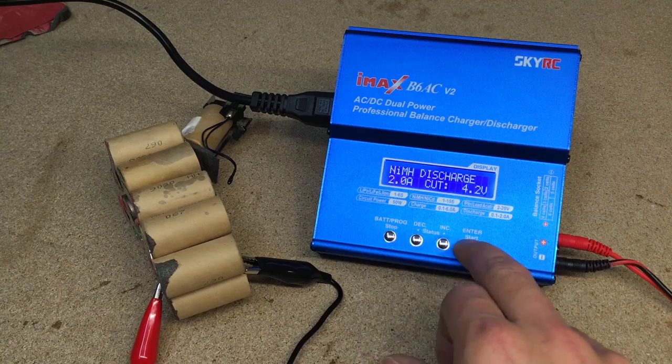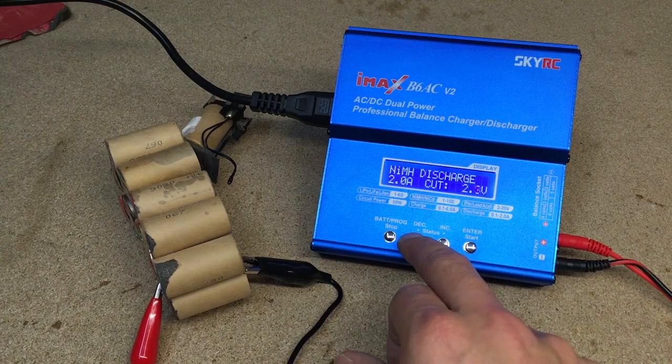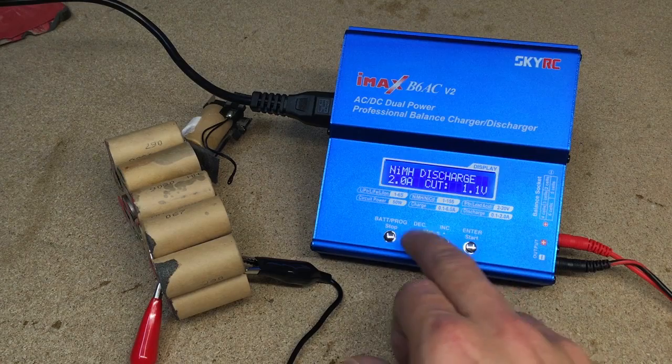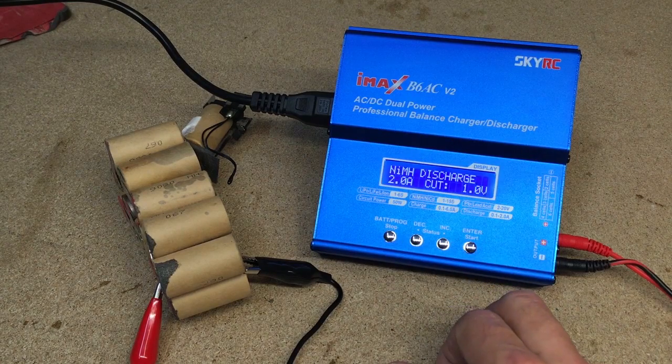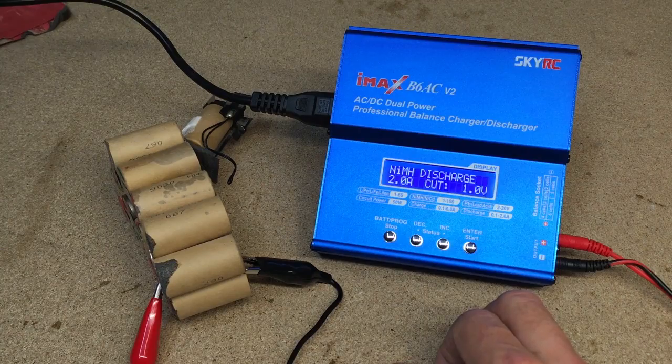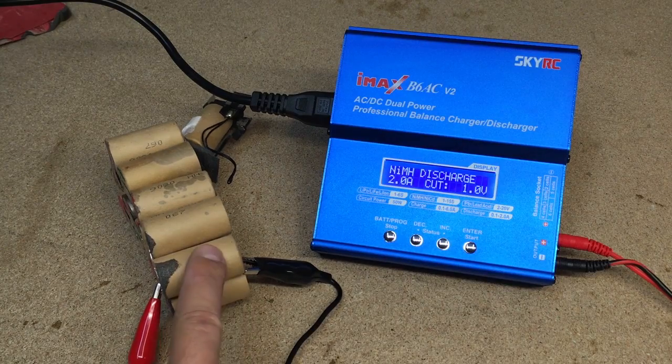I did that because I want to know how much juice is still left in the good cells and thus if repairing this battery is worth it at all. All three cells showed around 2 amp hours of capacity. So all good and this battery is still usable.